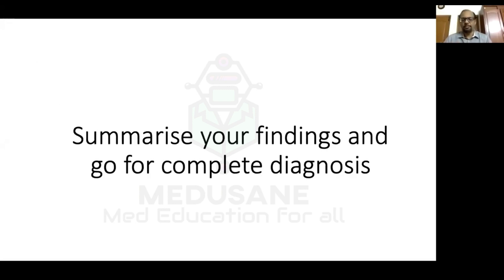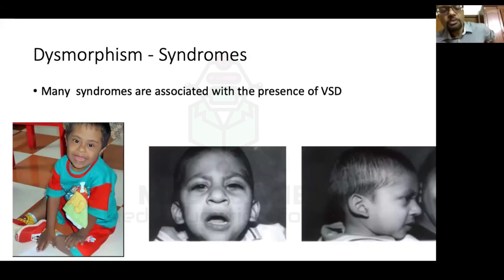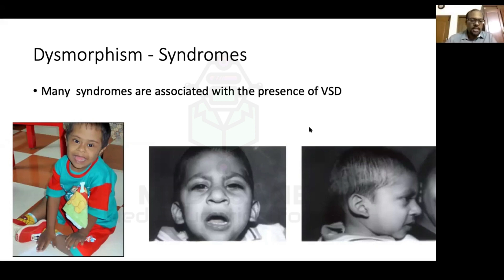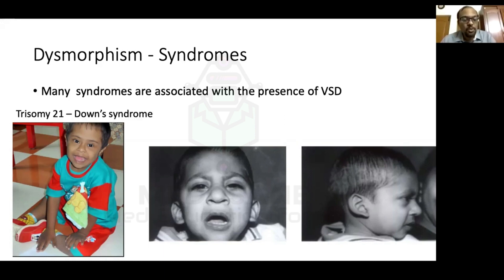We'll go through each examination finding and its relation to VSD before giving the final diagnosis. In congenital heart disease, always look for facial or skeletal features of syndromes. Many syndromes are associated with VSD — for example, a child with brachycephaly, mongoloid slant, epicanthal folds, large tongue, and simian crease indicates Down syndrome (trisomy 21), whose prototype lesion is AV canal defect, though VSD can also be associated.